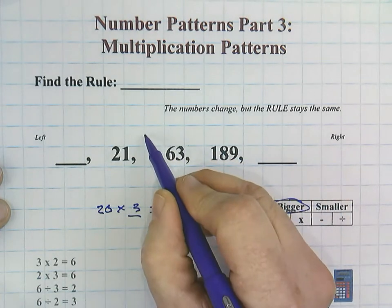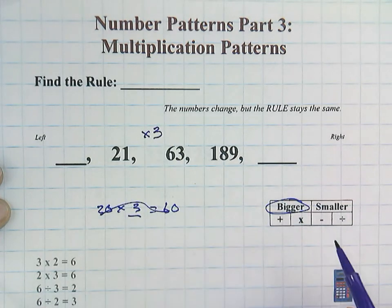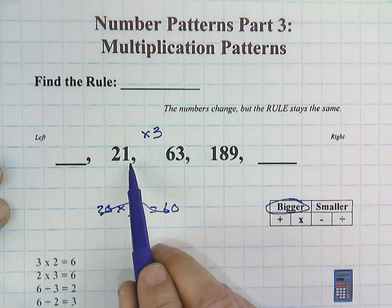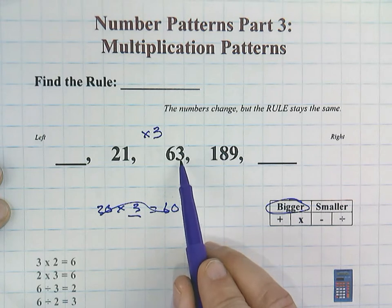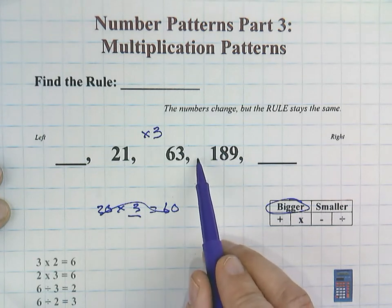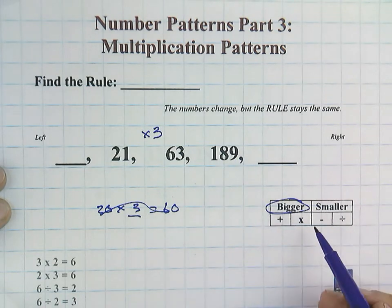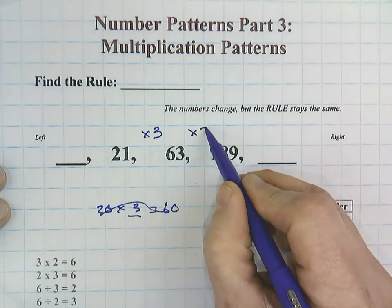So I'm seeing this as a times 3 rule. It could be addition, but I see that that would be roughly about 40, 41, 42. And this is a much greater difference. So I know that if I add 40 something to 60, it's only going to be like about 105 or something. So it's definitely a multiplication rule.